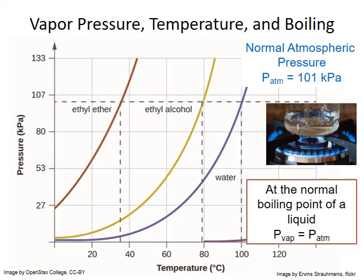For substances with weaker intermolecular attractions, like ethyl ether, the normal boiling point is much lower — it reaches 101 kilopascals at 35 degrees Celsius. Ethyl alcohol reaches that vapor pressure at close to 80 degrees Celsius.